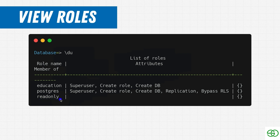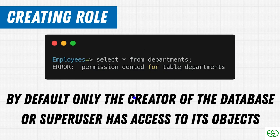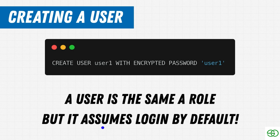You can see here that the 'read_only' role has meager attributes. An important thing to note: when you create a role, by default only the creator of the database or a superuser has access to its objects. Anyone else needs to be specifically given access. We've been lucky working as a superuser, but that default restriction is important to keep in mind when dealing with roles and permissions. Next, we'll look at creating a user.